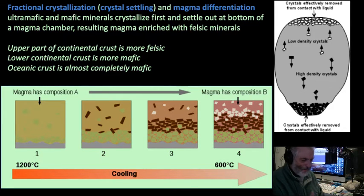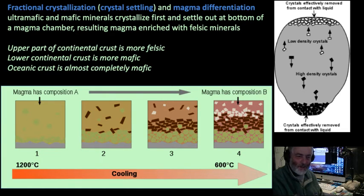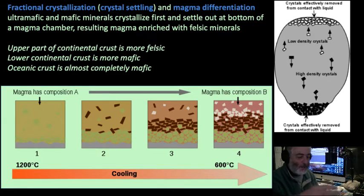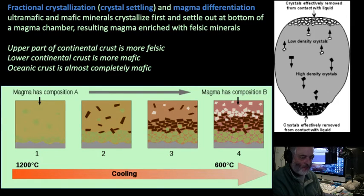There's a process called fractional crystallization. If olivine crystallizes first and settles to the bottom of a magma chamber, that increases the felsic content of the remaining magma. Pyroxenes and other iron- and magnesium-rich mafic minerals fall to the bottom, while lighter felsic minerals rise to the top. This crystal settling leads to magma differentiation — increasing felsic composition through time. We call that crystal settling.